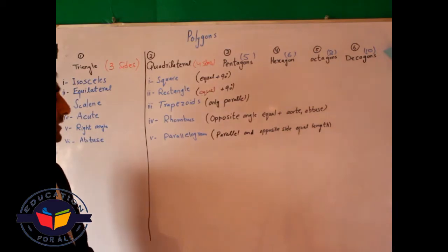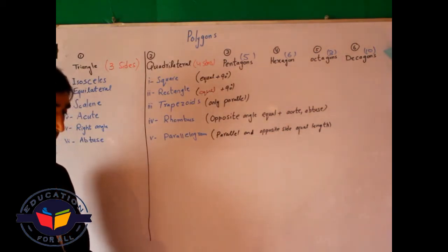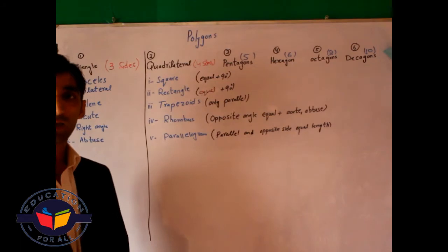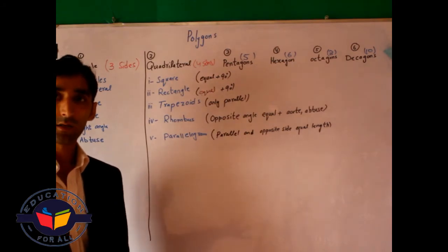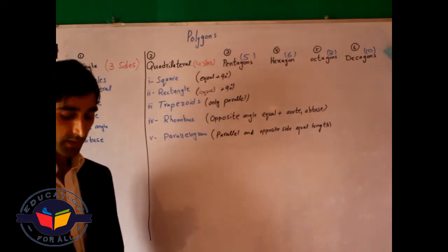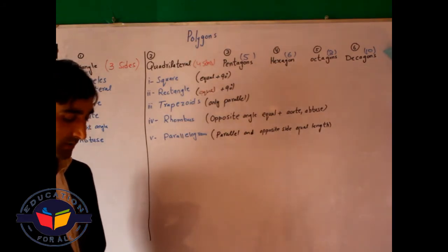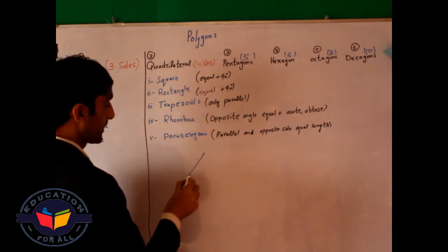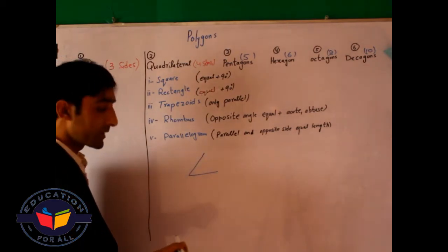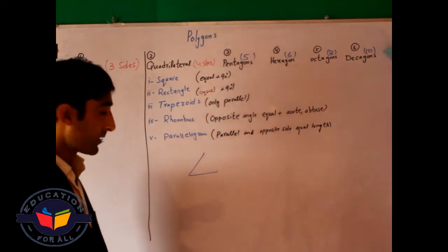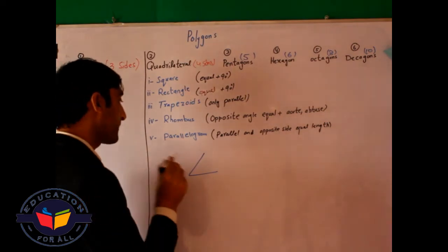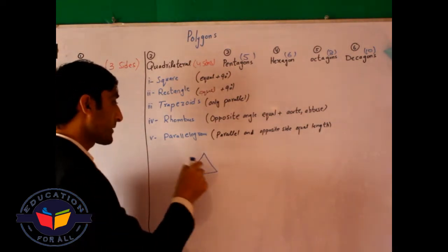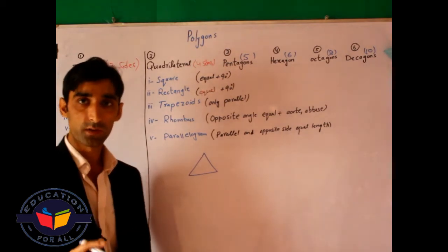A polygon is a figure — a closed figure which can have any number of sides. Let's suppose this is a figure, but this figure is not closed. And if I add another line, that figure becomes closed.